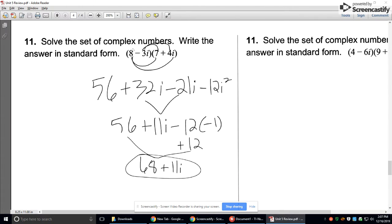Number 11 is a multiplication problem. So distribute everything. What's 8 times 7? 56. 8 times 4i? 32i. Negative 3i times 7? Negative 21i. Negative 3i times 4i? That has 2 i's, so that's going to make an i squared. Negative 3 times 4 is negative 12. So it's negative 12i squared.